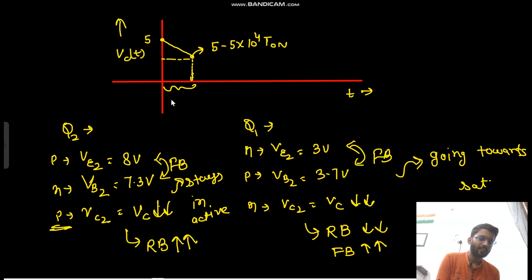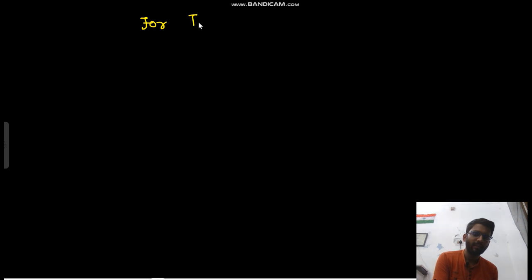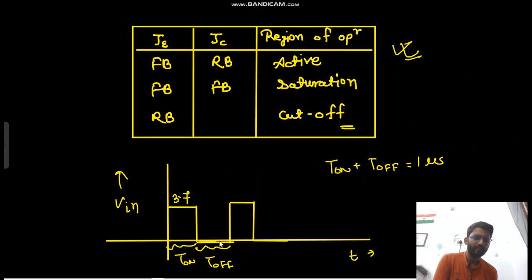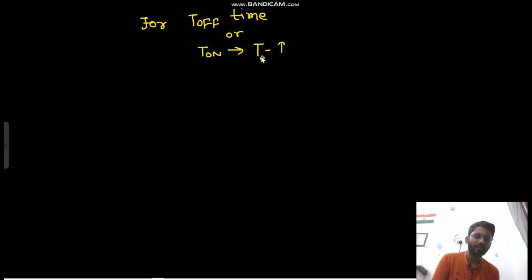In this region Q1 is moving towards saturation. Now we will talk about the second condition for T-off time — from T-on to T.